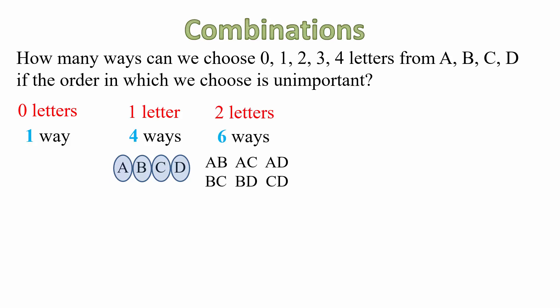For two letters, there are six ways. We can choose either A, B, A, C, A, D, B, C, B, D or C, D. For three letters, there are four ways, as you can see there. And for four letters, one way. That means choosing all four letters at the same time.